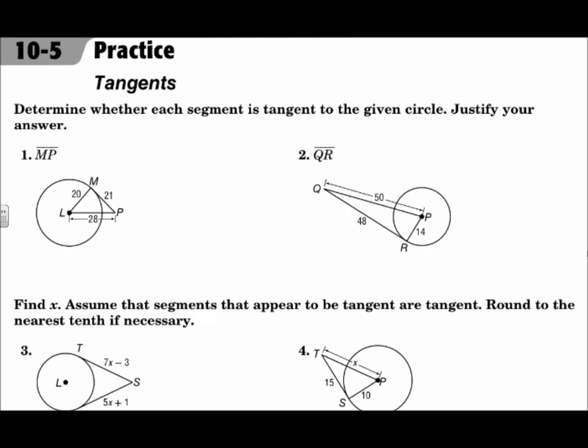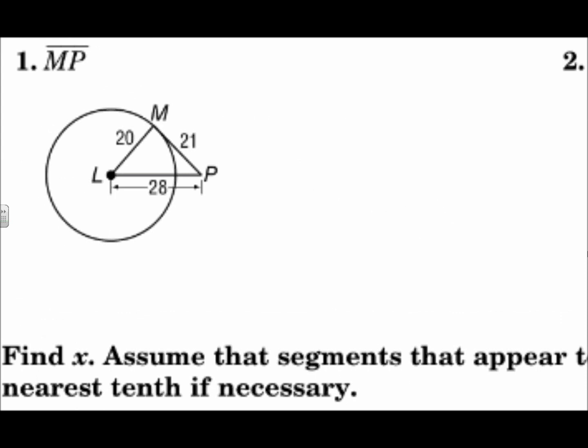Determine whether each segment is tangent to the given circle. Justify your answer. Well, what we're testing for is a right angle there. In order to be a right angle, that must be a right triangle. So let's test the Pythagorean theorem to see if it works. 20 squared plus 21 squared equals 28 squared. 20 squared plus 21 squared is 841. 28 squared is 784. Since those are not equal,